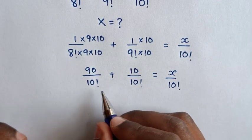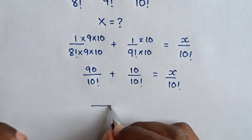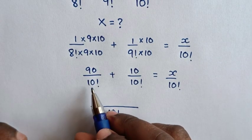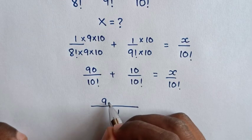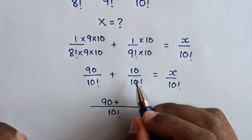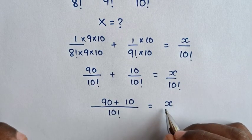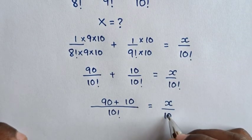The common denominator is 10 factorial. Since 10 factorial divided by 10 factorial is 1, we get 1 times 90 is 90 plus 1 times 10 is 10, equal to x over 10 factorial.